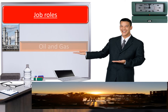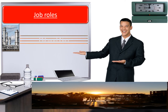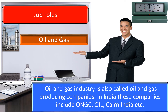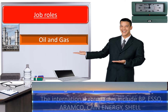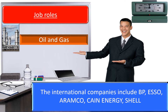Job roles in oil and gas industries. Oil and gas industries are also called oil and gas producing companies. In India, these companies include ONGC, Oil India, OIL, and Cairn India. International companies include BP, Esso, Aramco, Cairn Energy, and Shell.